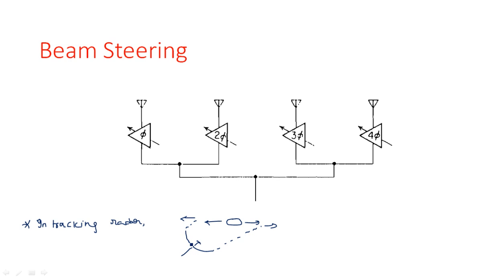This is the conventional way tracking is done, but rotating the antenna plate continuously has limitations. The servo mechanism introduces mechanical parts into an electronic system, requiring continuous maintenance. If any component fails, there will be a problem. To avoid such issues, we have to go for phased array antennas.